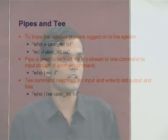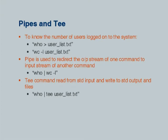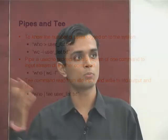Then there is a command called tee. When we saw the error stream was not printed on the screen — it went directly to the file. So if you want it to be printed on the screen as well, you can pipe the output of the command to tee followed by the filename. So 'who' will list out the users, and piping it to tee userlist.txt will also print the output and redirect it to the file.